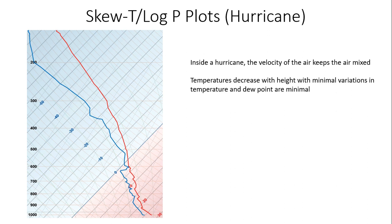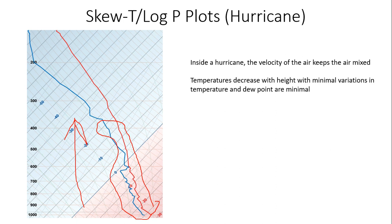Finally, here is an example of a hurricane Skew-T Log-P plot. Inside a hurricane, the velocity of the air keeps it fairly well mixed. Temperature decreases with height with minimal variations in temperature and dew point. Notice how close the temperature and dew point lines are to each other over quite a vertical extent — indicating a saturated profile. The surface temperature is very warm and moist, and you have a very deeply saturated area of the atmosphere where you're getting a lot of heavy rain.